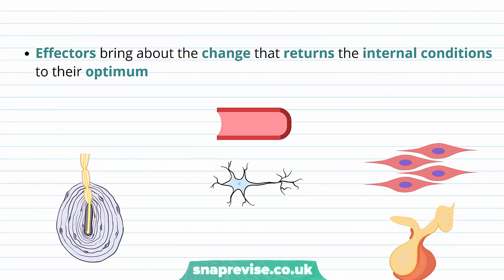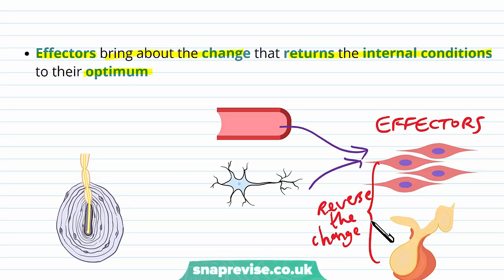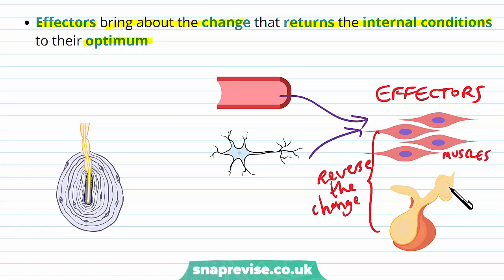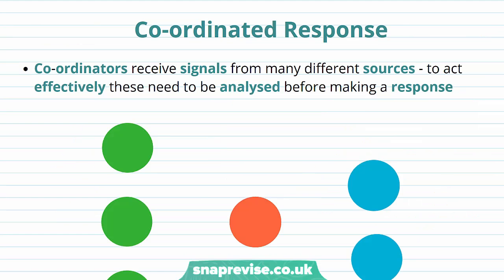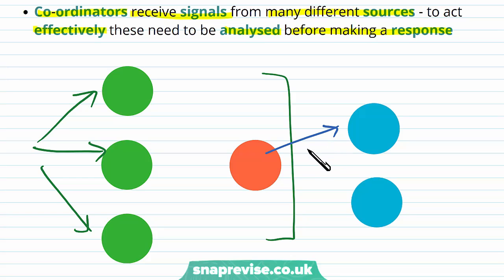The effectors, once they've received these signals, bring about the change which returns the internal conditions back to the optimum. The signals from the coordinators arrive at the effectors, and the effectors carry out a specific action to reverse the change. These effectors can usually be classed as either muscles or glands which release hormones. Since coordinators receive signals from many different places, they have to analyse all the signals before they can choose to make a response, covering different types of stimuli before the effecting signals are sent out.